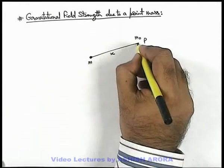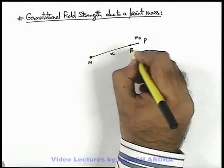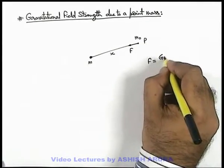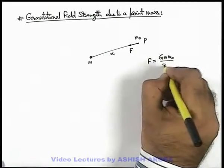In this situation this mass m will exert a force F according to Newton's law of gravitation on m₀, which is given as Gmm₀ by x square.